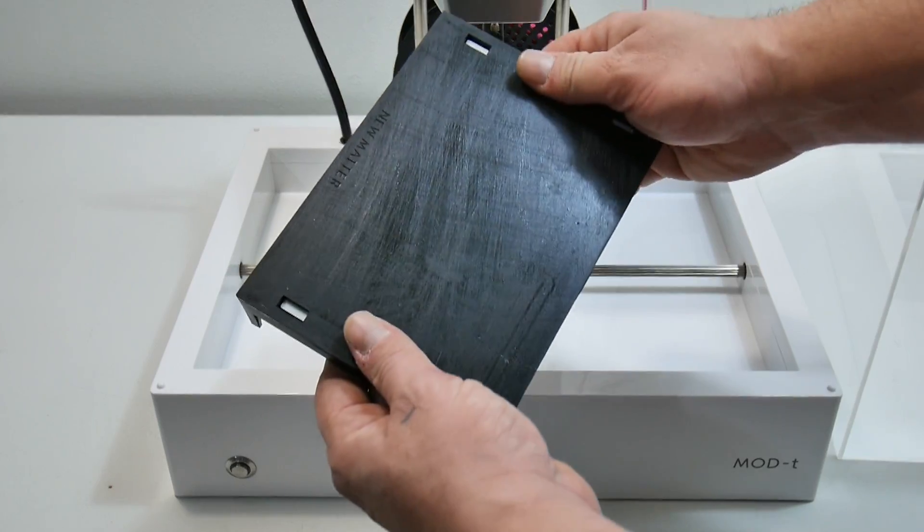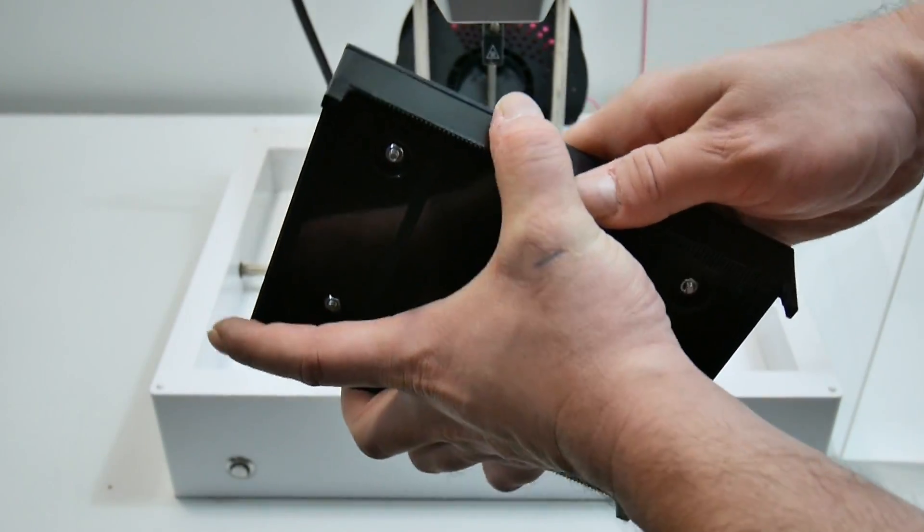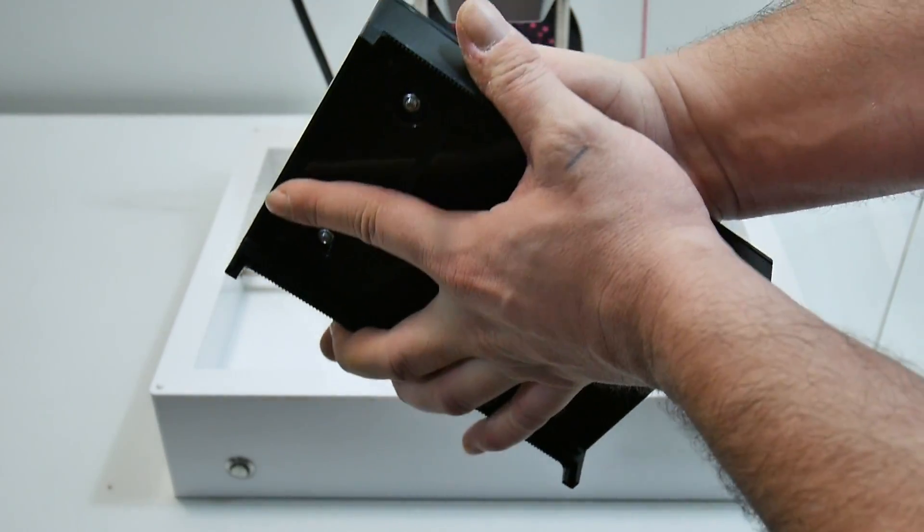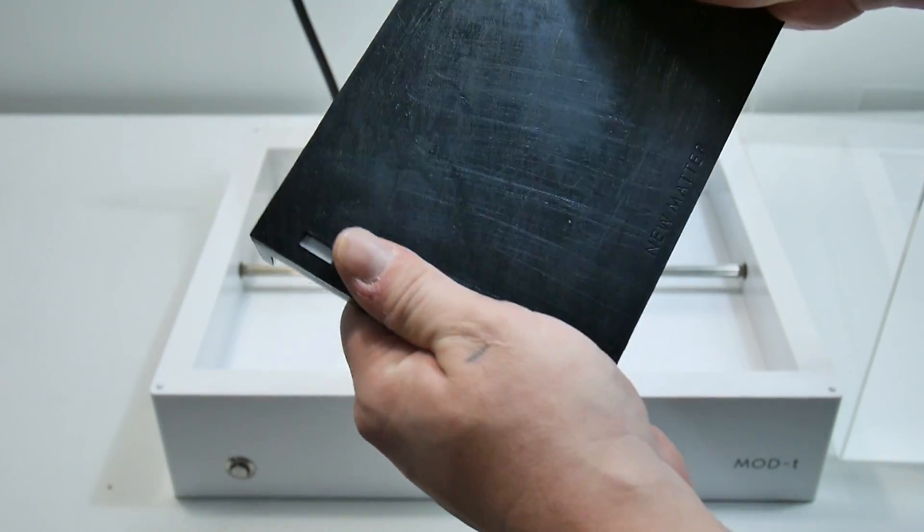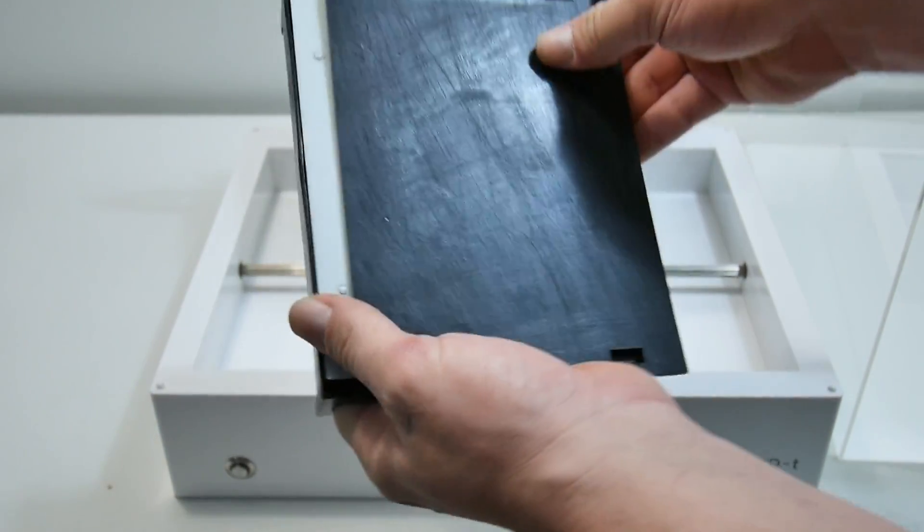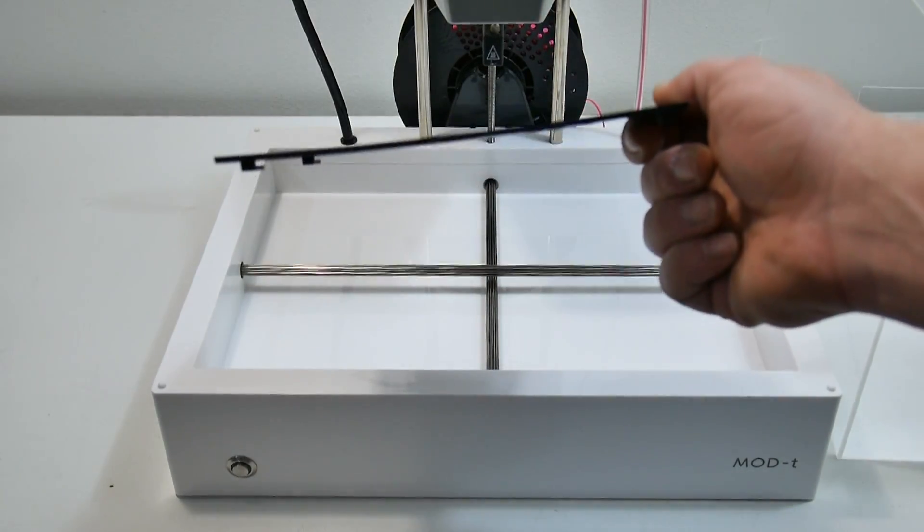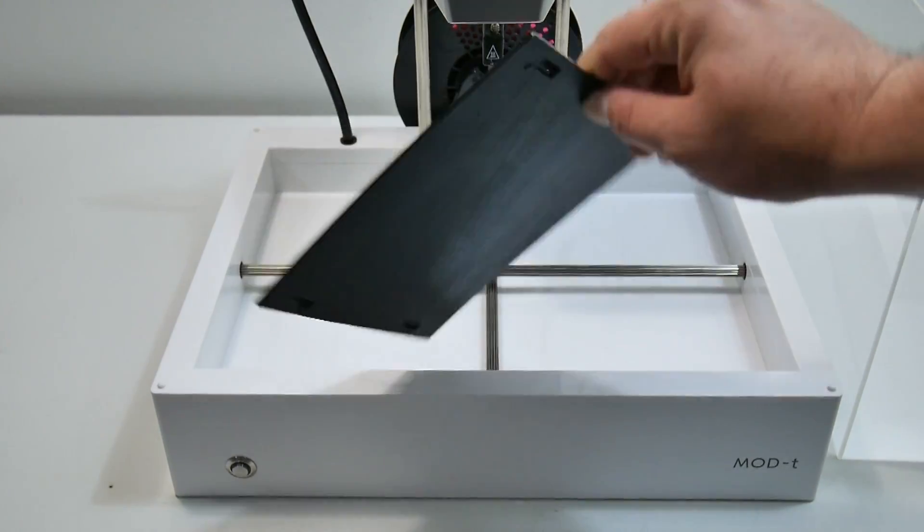So these are the build plates here, and let me take this one off of here. As you can see, I've scuffed it up. I've tried to get more life out of it, but I think it's pretty much done. I've done a lot of printing with it, and I actually hair sprayed it. I tried tape, everything. But these are replaceable, and as you can see, this one is a little bit warped, so I definitely need a new one to start printing some high-quality stuff.